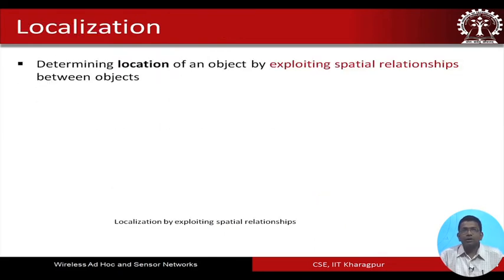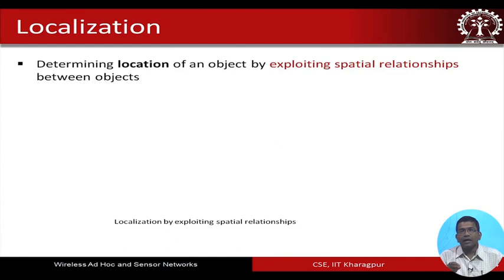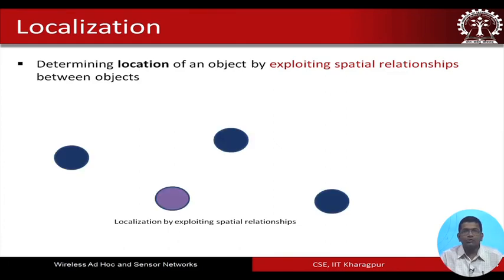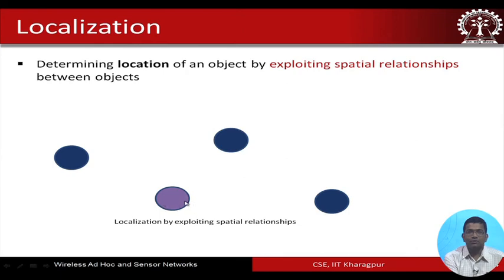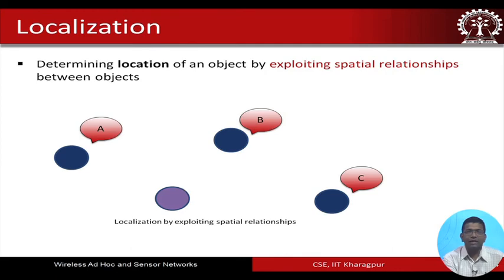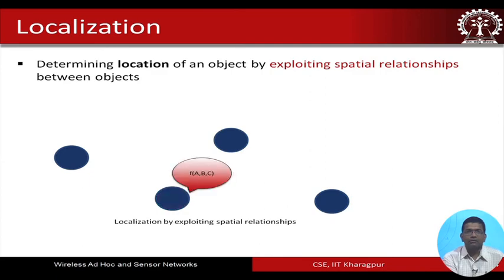Localization is a very important issue. Localization talks about determining the location of a particular object by exploiting the spatial relationships between different objects. If we know the locations of different nodes in a particular terrain, can we determine the location of an unknown node as a function of those known locations? For example, with nodes A, B, and C whose locations are known, we find the location of an unknown node as a function of the locations of A, B, and C — this is the whole idea behind the problem of localization in sensor networks.